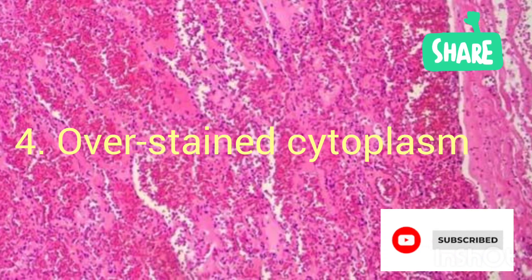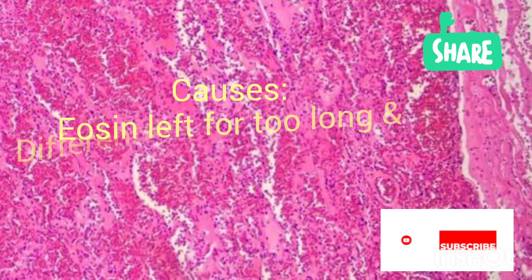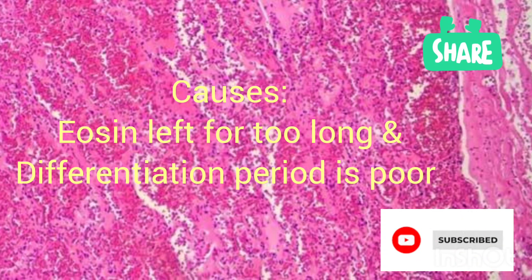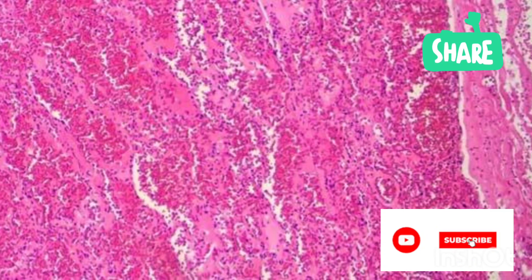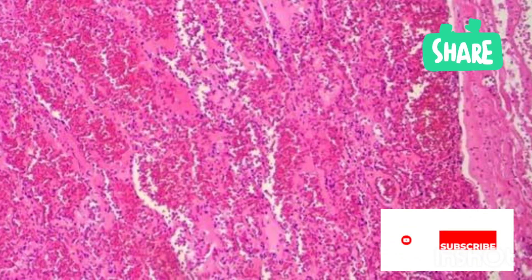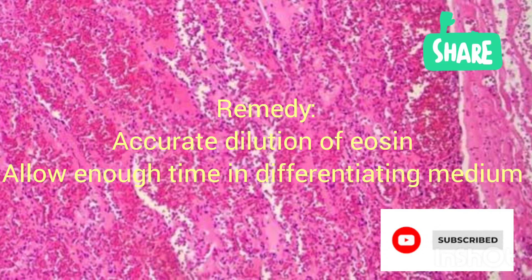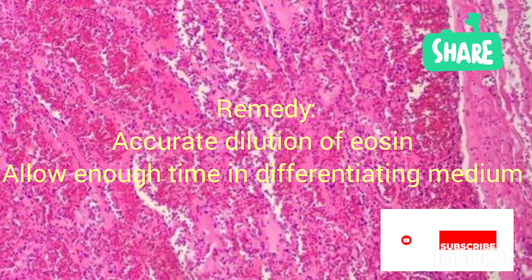Another problem — number four — is when the cytoplasm is overstained. That means the eosin was left for too long and the differentiation period is poor. The problem could also be that passing it through the differentiating alcohol too rapidly prevented good differentiation of eosin. So the remedy is to ensure your eosin solution is diluted — not too concentrated — and allow enough time in the differentiating medium.